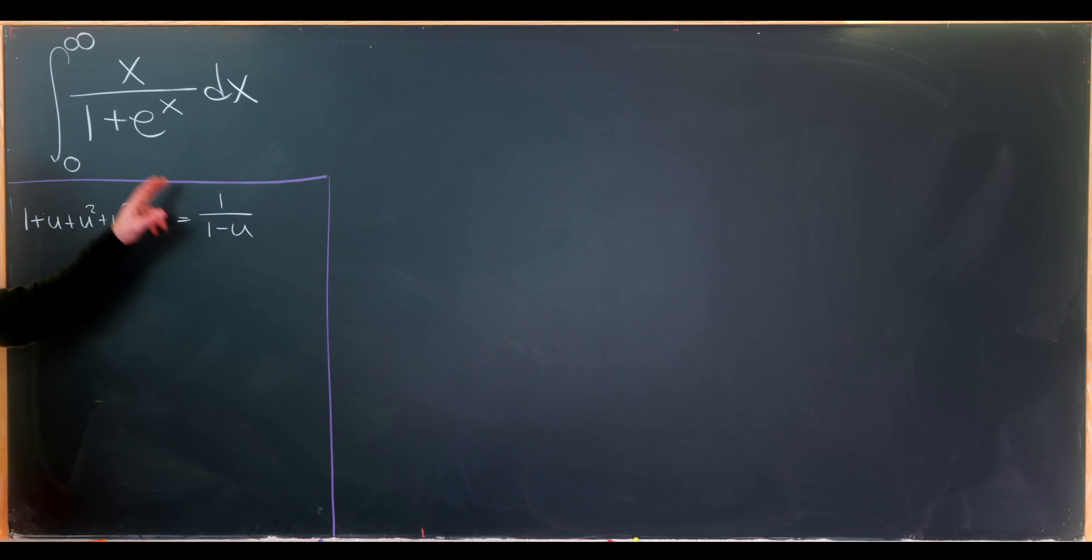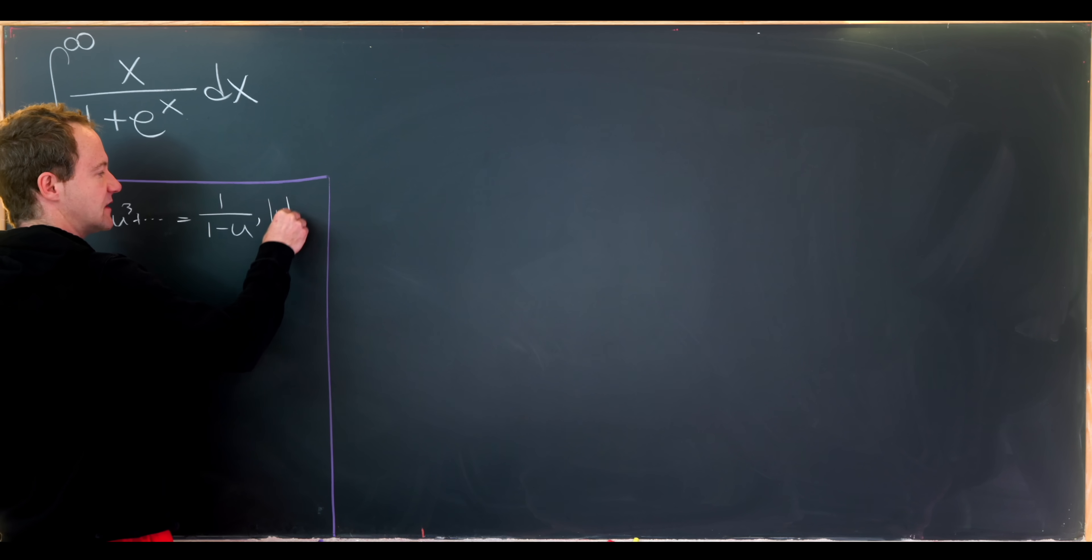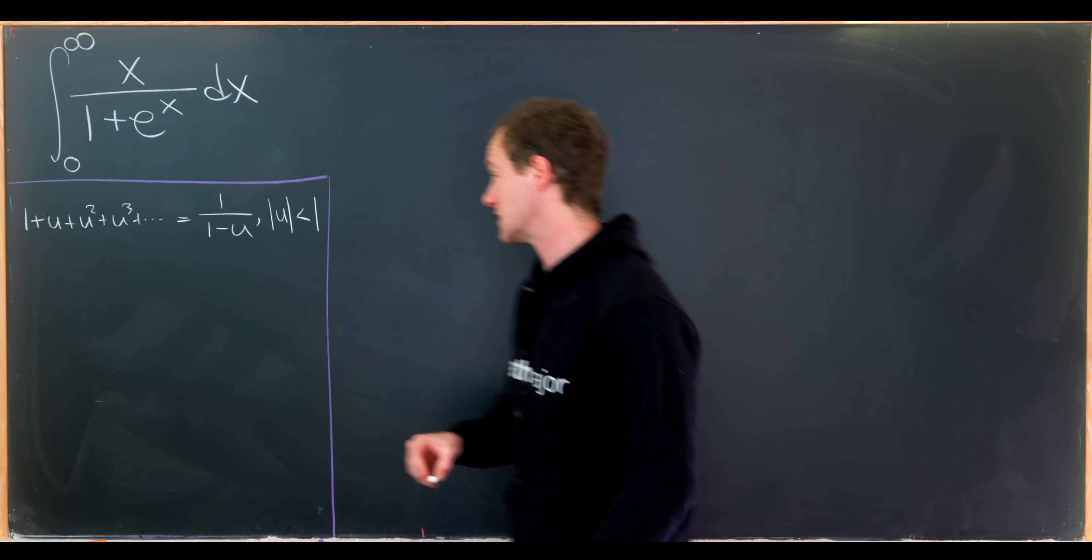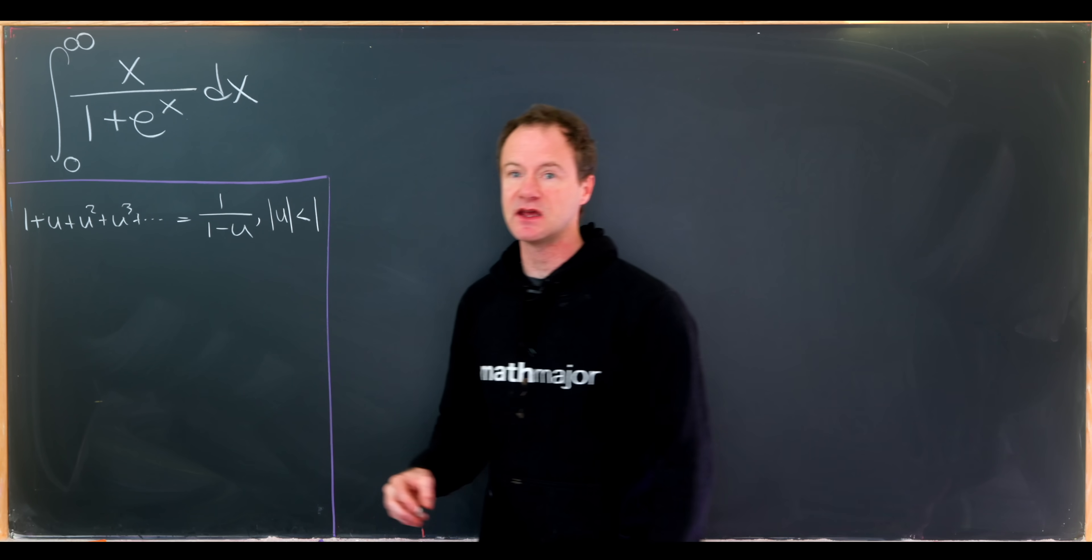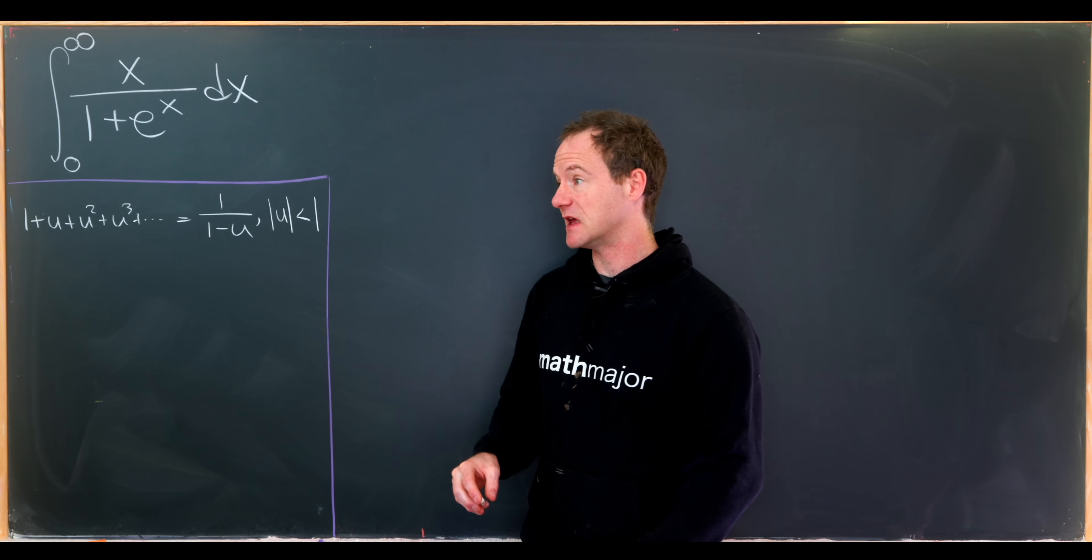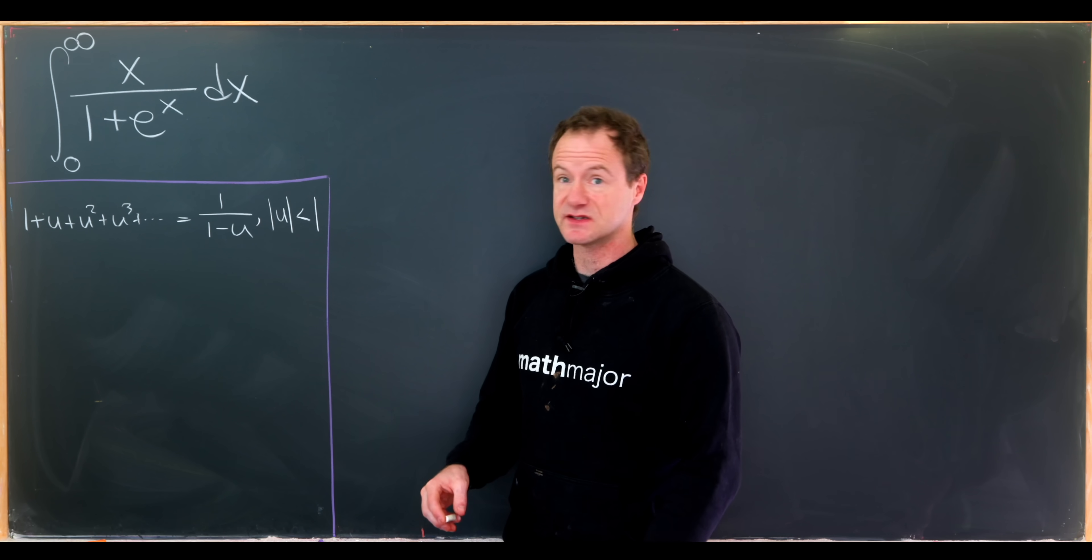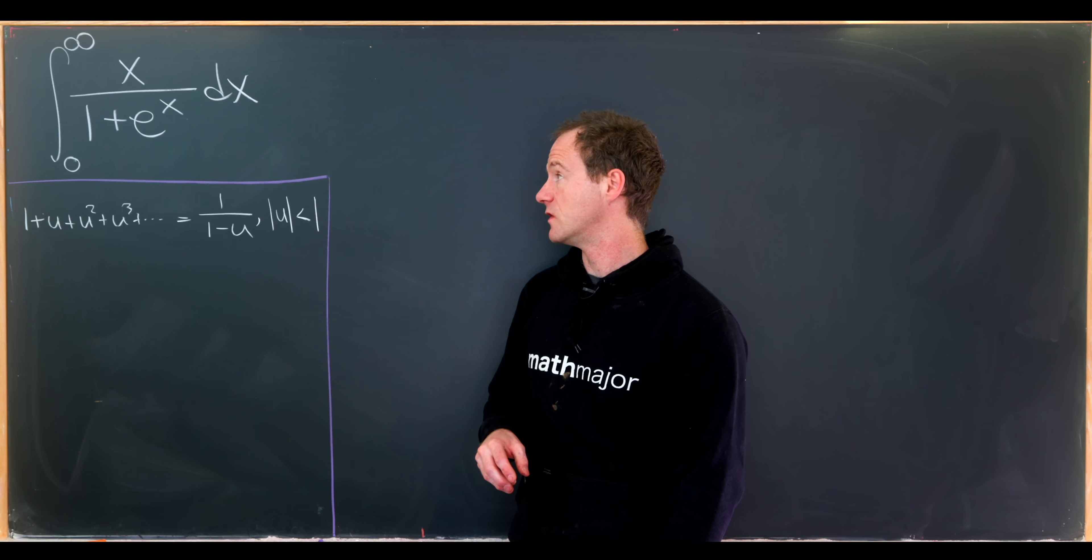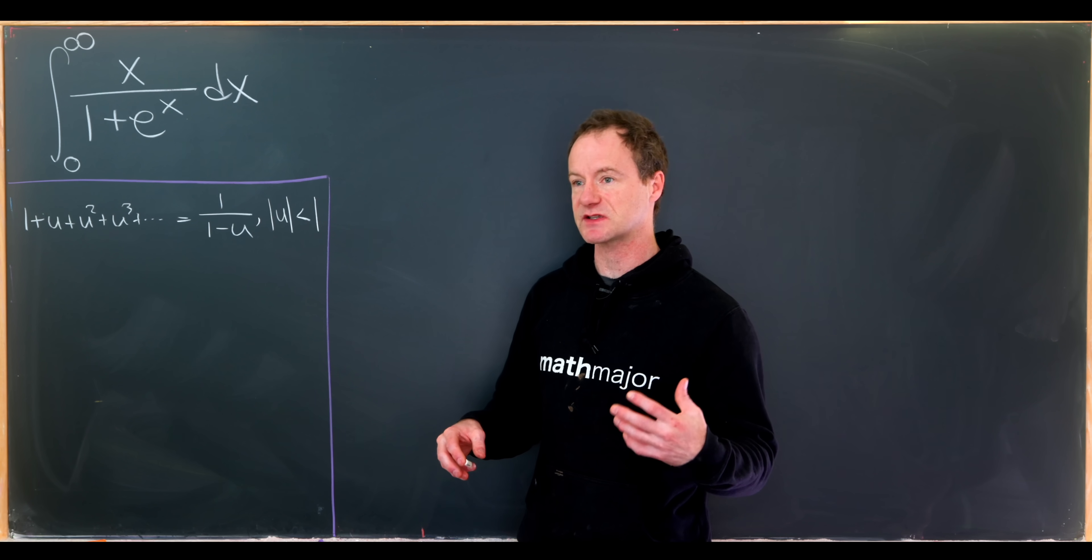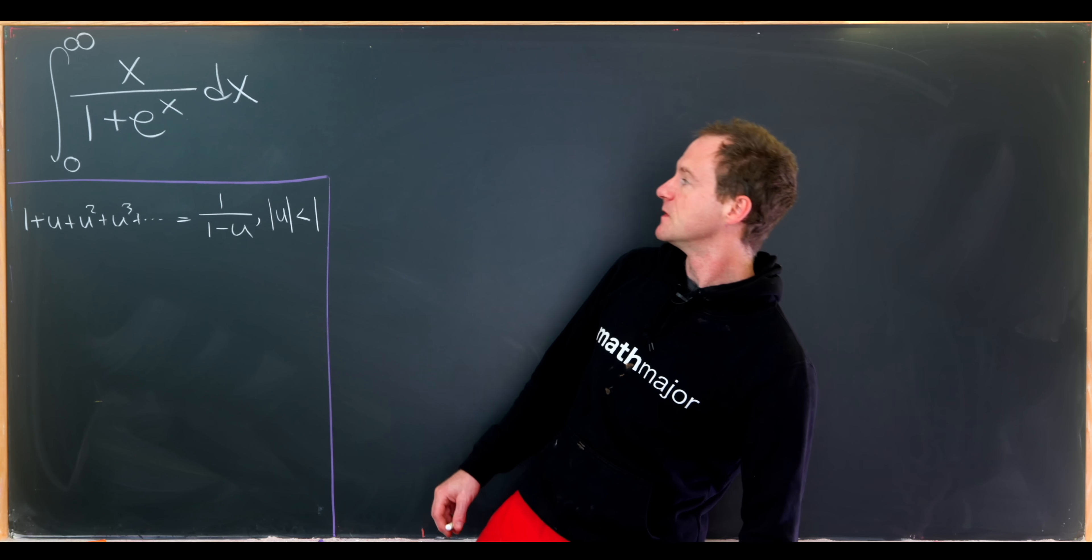Let's recall the rule for that. We have one plus u plus u squared plus u cubed plus dot dot dot equals one over one minus u. So it looks like if we take u to be negative e to the x, we're good to go. But wait, we can't do that. And that's because this only converges when the absolute value of u is less than one. But when x is between zero and infinity, the absolute value of e to the x is most definitely bigger than one. So we need to manipulate this thing a little bit so that we're in some sort of region where this looks like a summed geometric series in a convergent region.